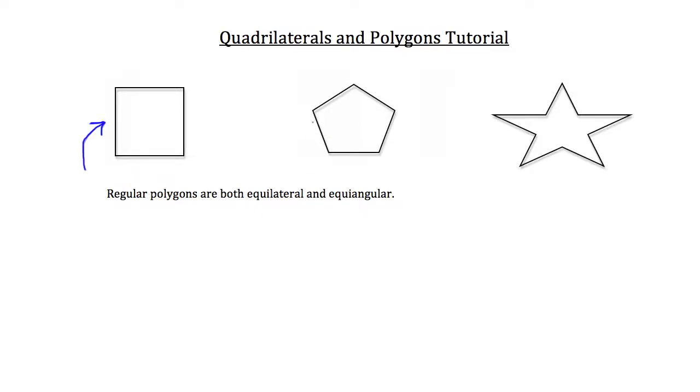The second polygon, the pentagon there, is also a regular polygon. All the side lengths are congruent, the same length, and all the interior angles are also going to be congruent to each other, the same length.